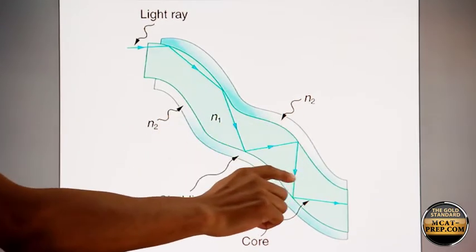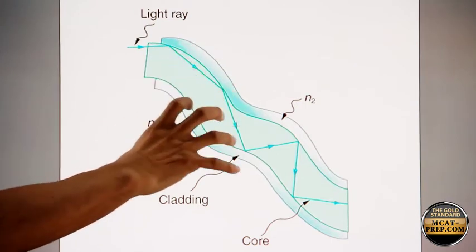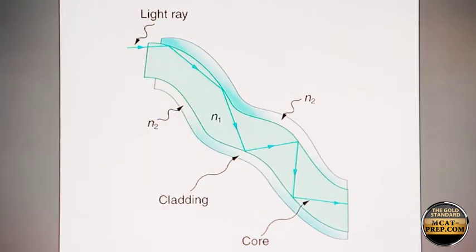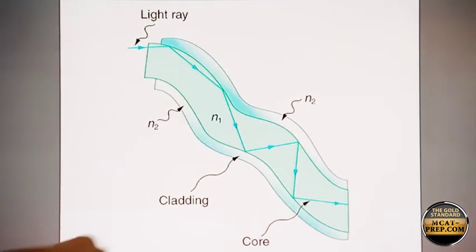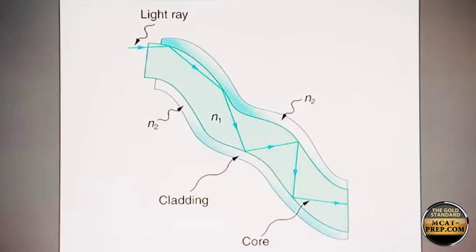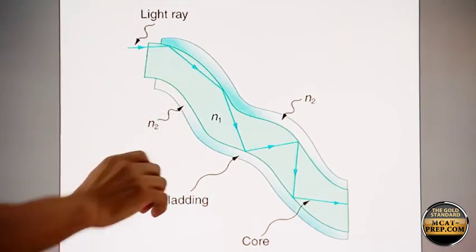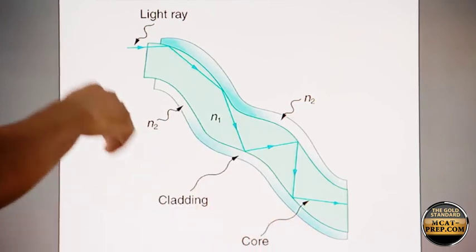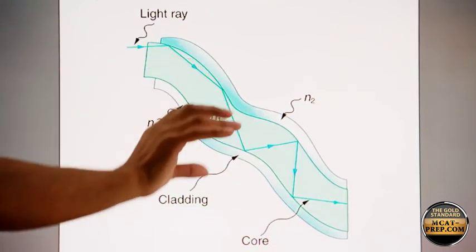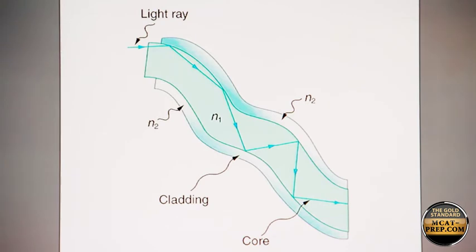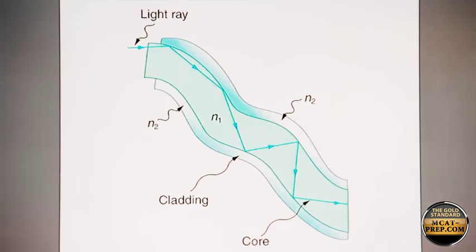If it wasn't for the cladding, because all the fibers are together in the endoscope, if it wasn't for the cladding, then the light rays would be bouncing between fibers. But because of the cladding, the light rays are maintained within one fiber, and you have total internal reflection along the length, even though the endoscope changes directions and turns and curves and so on.